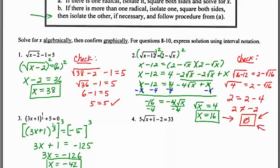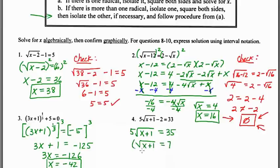For number four, I'll start isolating the radical by adding two: 5√(x+1) = 35. Dividing both sides by five gives √(x+1) = 7. Squaring both sides gives x + 1 = 49, then subtracting one gives x = 48.